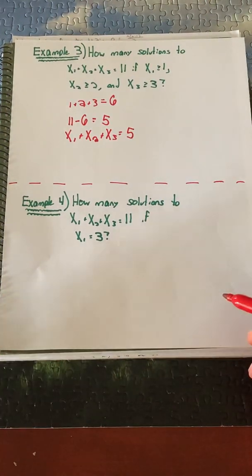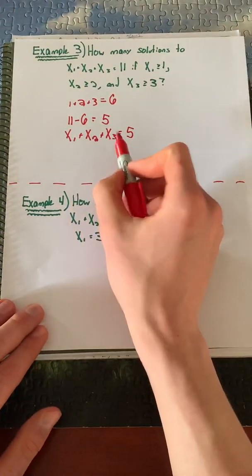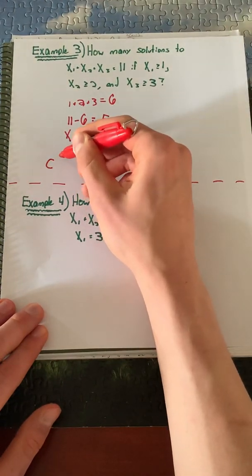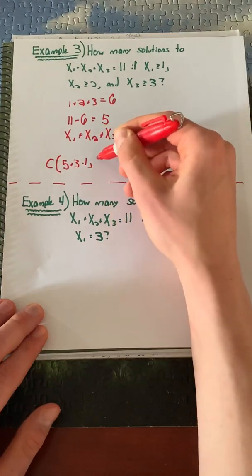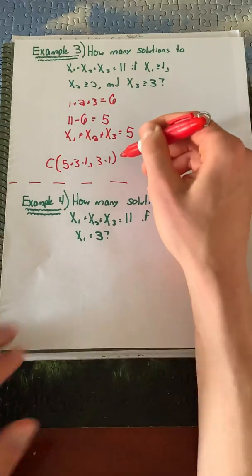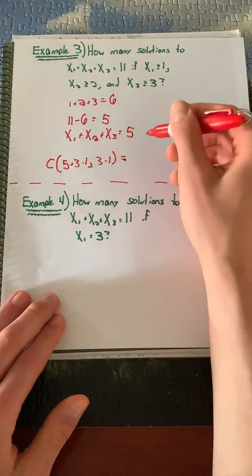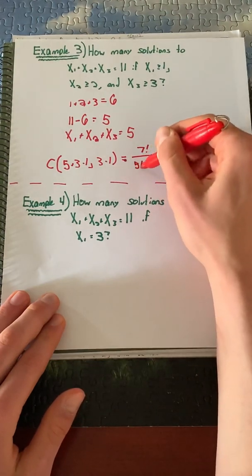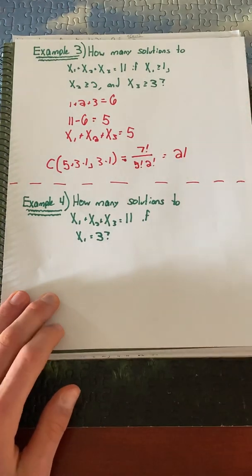This is very similar to what we just solved. We know this is our n value, and we have three variables, so that's our r value. We have C(5+3-1, 3-1) different combinations to solve this, which gives us 7!/(5!×2!), or only 21 solutions now.